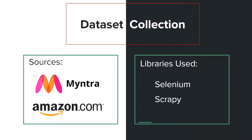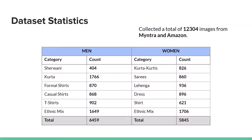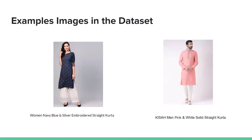We used libraries like Selenium and Scrapy with Python to scrape data from the sites. We scraped images as well as descriptions, as we need to train the model on both. We scraped around 12,304 images from Myntra and Amazon, taking care to keep the data balanced — around 6,000 men and 6,000 women, and each clothing category is also balanced.